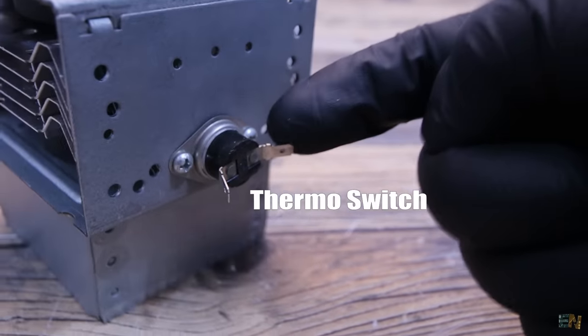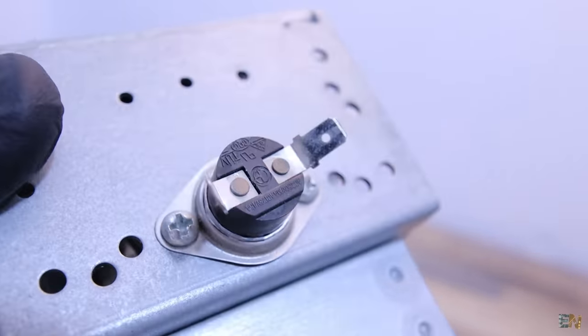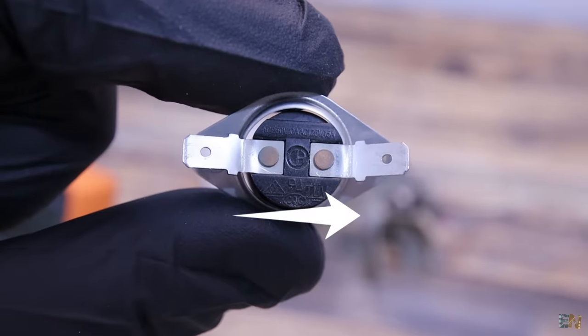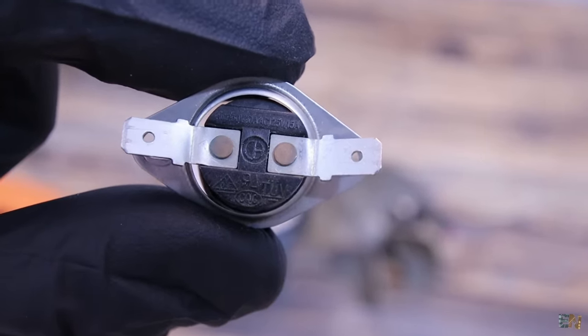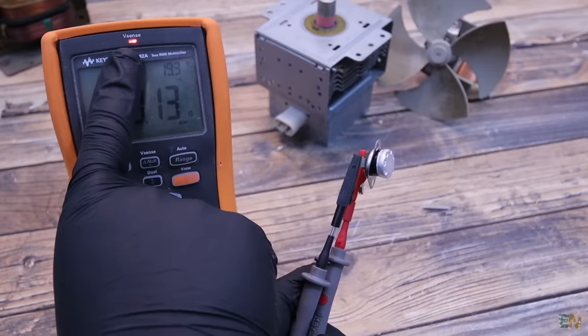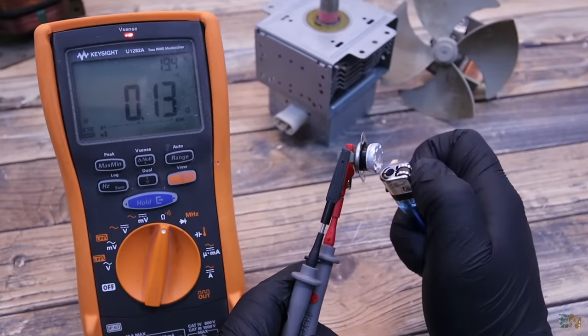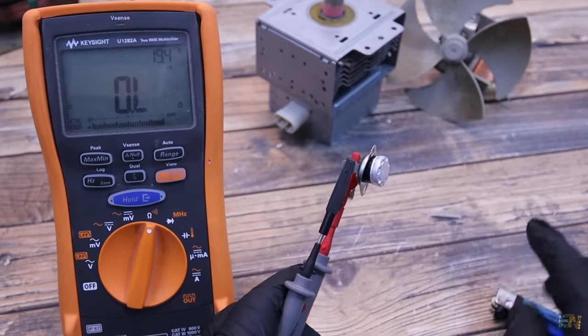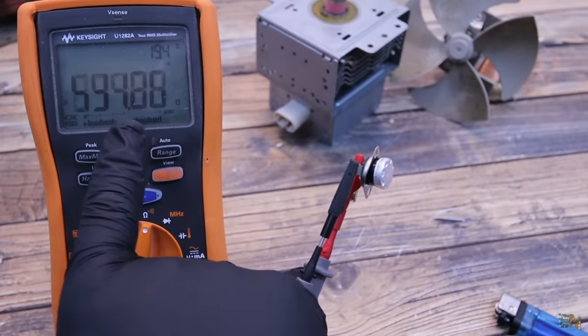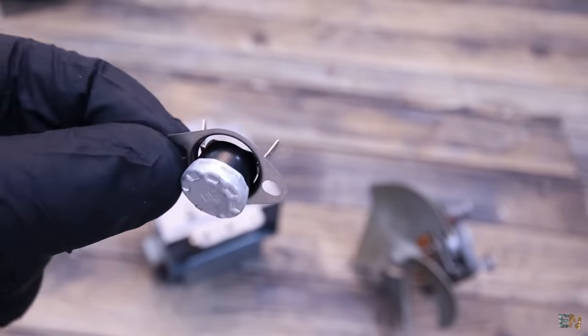Also, to detect when the maximum temperature was reached, on the other side we have the thermal switch. This component cuts off the current flow when it passes a certain temperature. Here I have this switch connected to the multimeter and we can hear a beep, meaning that the switch is closed. I heat it up and after we hear a click, the switch is now open. That's how it works. When it gets cold again, the current flow opens back.